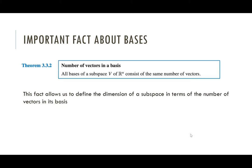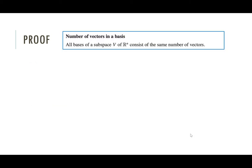Let's prove this theorem: the number of vectors in a basis is the same no matter what the basis is, so long as you're looking at the same space. Our strategy is to start by assuming we have two distinct bases, and then show that these two bases have to have the same number of vectors. I'll note that the textbook calls this proof a little technical and not very enlightening.